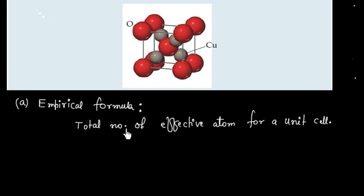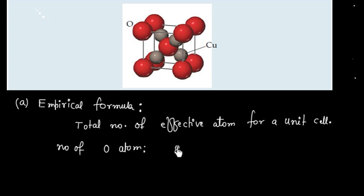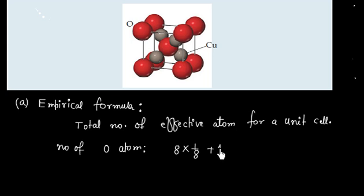Let us first consider the oxygen atom. If I see this unit cell, we have 8 oxygen atoms at the corners, and due to corner atoms we have a contribution of 1/8 to this unit cell. We also have 1 oxygen atom in the center of this cube, which contributes 100% to this unit cell. So the total contribution is 2 oxygen atoms.